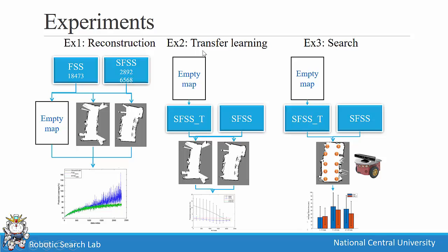Experiment 2 is a transfer learning experiment where the initial Fourier coefficient for the SFSS transfer learning algorithm is learned from an empty map, while for standard FSS the initial coefficient is a zero vector. Their performance is compared across two different maps. Experiment 3 uses the same setting as Experiment 2 but in Map 4, with a robot searching for targets within 30 trials, comparing search time performance.